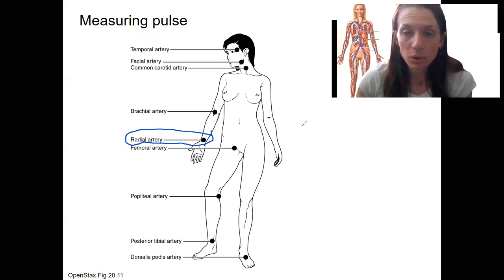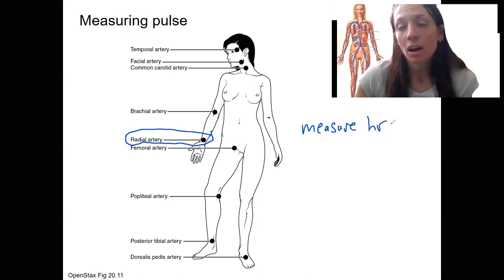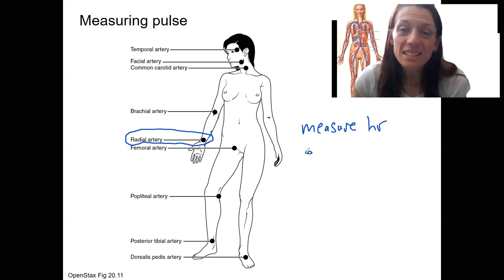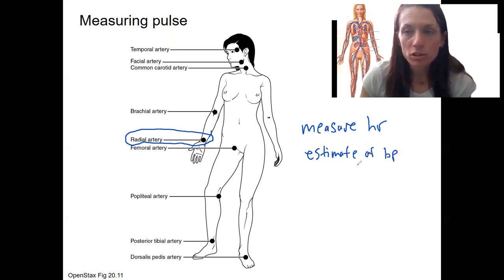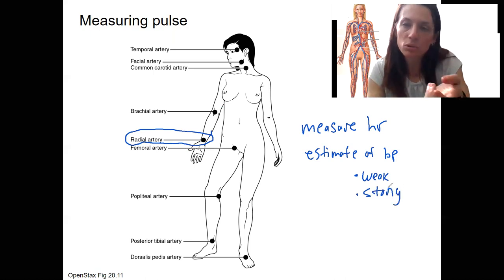So pulse can give you a measure of heart rate. The pulse rate tells you heart rate. And that's probably what you know already, right? It's used to measure heart rate. The other thing it can do, though, is actually an estimate of blood pressure. So pulse can be weak or strong, right? You may have heard those terms. That's different than the actual rate of the heart. That's how strong the pulse feels.